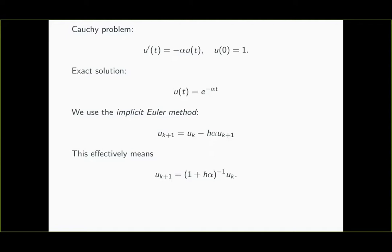We still have our Cauchy problem u'(t) = -α·u(t) with initial condition u(0) = 1, whose exact solution is the nicely decaying function u(t) = e^(-αt). This time we take a look at another numerical method for ordinary differential equations. Instead of the Euler method — also known as the explicit Euler method — we look at what is known as the implicit Euler method. The iteration formula for the implicit Euler method looks very similar to the explicit Euler method, but there is a minor difference.